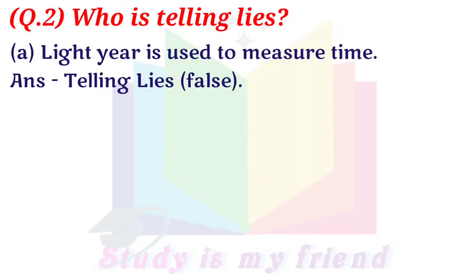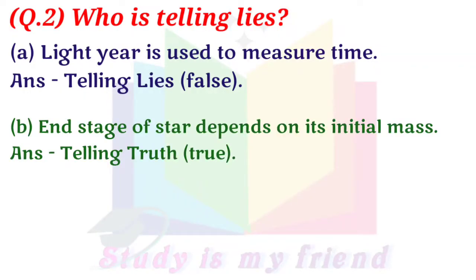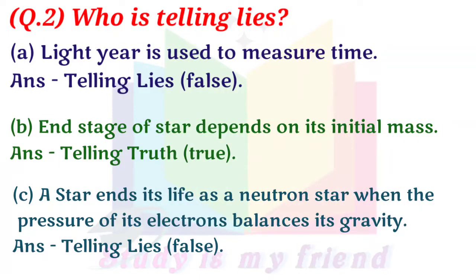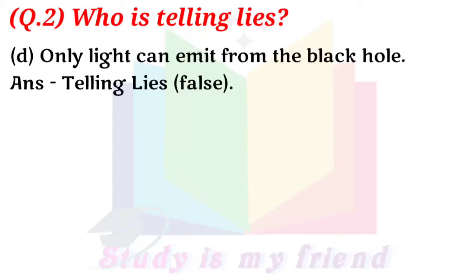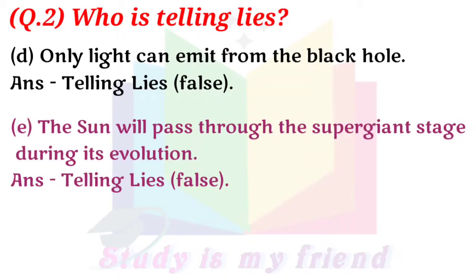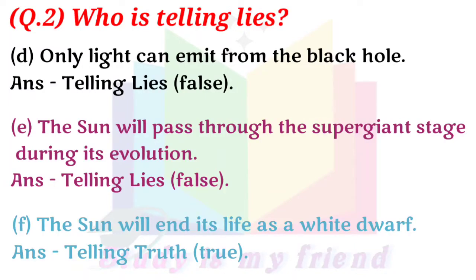A. Light year is used to measure time — Telling lies. B. End stage of stars depends on its initial mass — Telling truth. C. A star ends its life as a neutron star when the pressure of its electron balances its gravity — Telling lies. D. Only light can emit from the black hole — Telling lies. E. The sun will pass through the super giant stage during its evolution — Telling lies. F. The sun will end its life as a white dwarf — Telling truth.